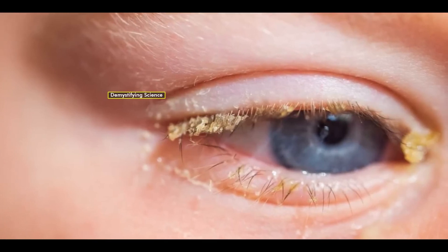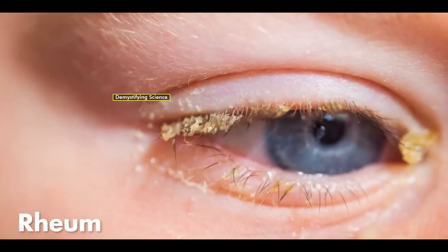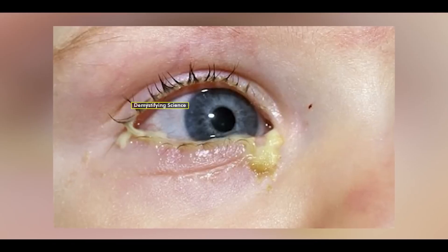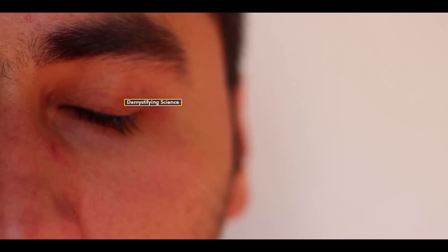In scientific terms, eye boogers are referred to as rheum and they are a result of eye discharge. This discharge consists of mucus, dust particles, and bacteria which mix with our tears.